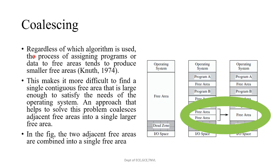This is about coalescing. Regardless of which algorithm is used, the process of assigning programs or data to free areas tends to produce smaller free areas, making it more difficult to find a single contiguous free area large enough to satisfy the needs of the operating system. An approach that helps solve this problem is coalescing, which combines adjacent free areas into a single larger free area. In the figure, the two adjacent free areas are combined into a single free area — this is called coalescing.